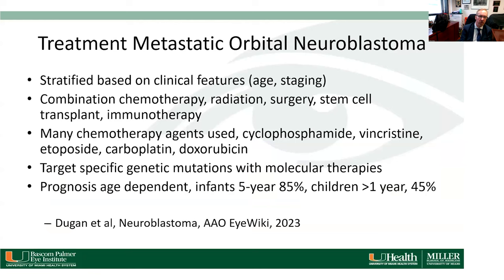Treatment of neuroblastoma is stratified based on clinical features, age, and stage. It is a combination of chemotherapy, radiation, surgery, stem cell transplant, and immunotherapy. Many chemotherapy agents are used: cyclophosphamide, vincristine, etoposide, carboplatin, doxorubicin. If the patient has specific genetic mutations, targeted molecular therapy is used. Prognosis is age-dependent — in infants the survival rate is about 85 percent, but in children greater than one year it's about 45 percent.